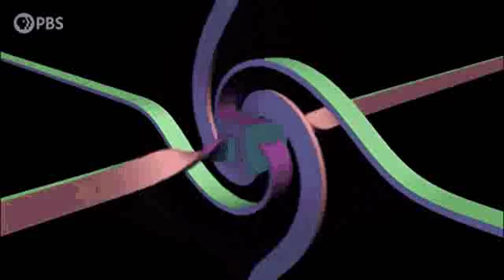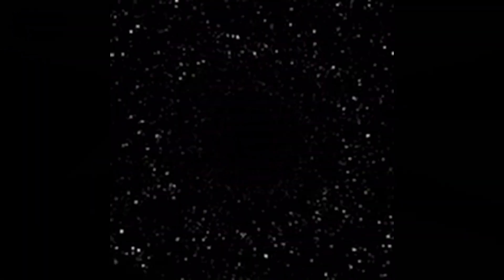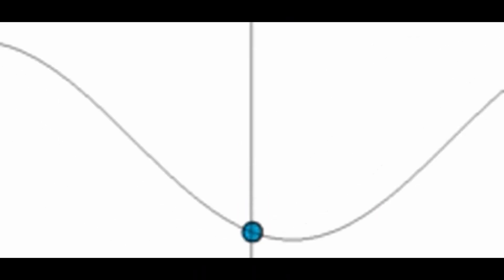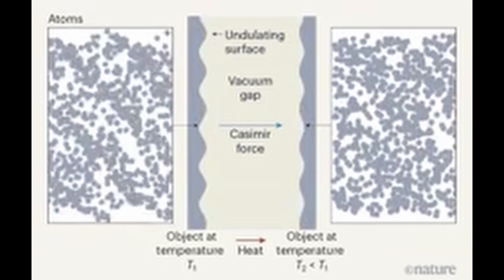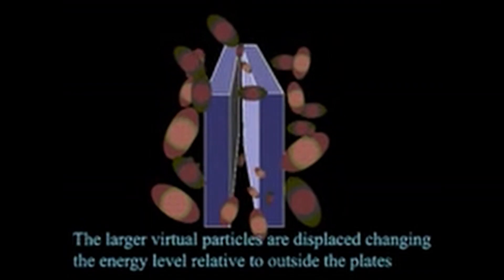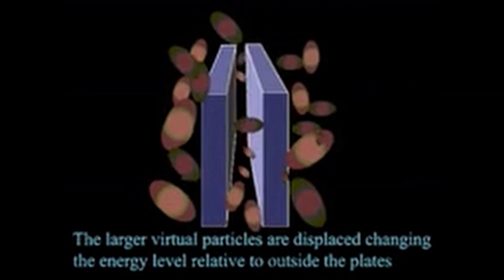Rapid mixing ensures that the Markov chain explores the entire state space effectively. If mixing is slow, the chain may get stuck in local modes, missing important regions of the distribution. Faster mixing improves exploration and enhances the quality of sample points.